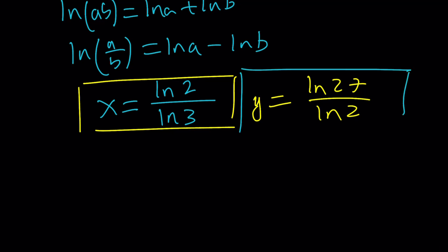So that's the value of Y and this is the value of X. So what do you do with those, right? You just multiply that because our goal is to get XY, which is the product of ln 2 over ln 3 and ln 27 over ln 2.